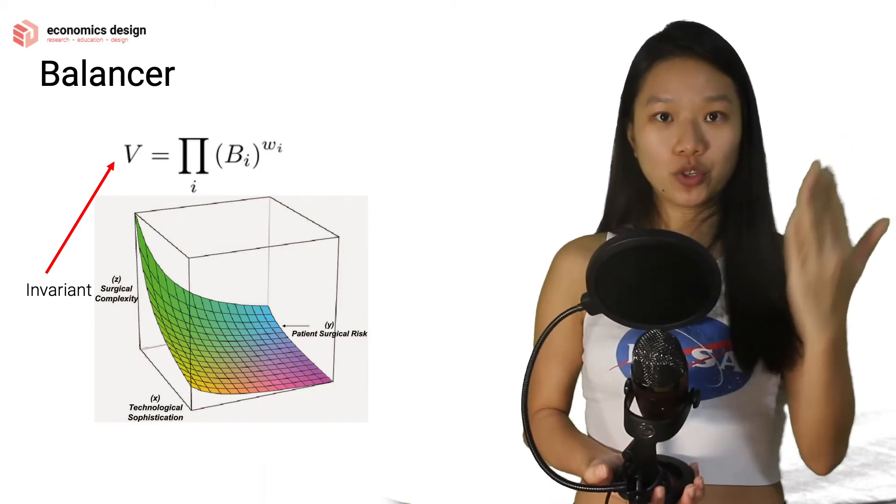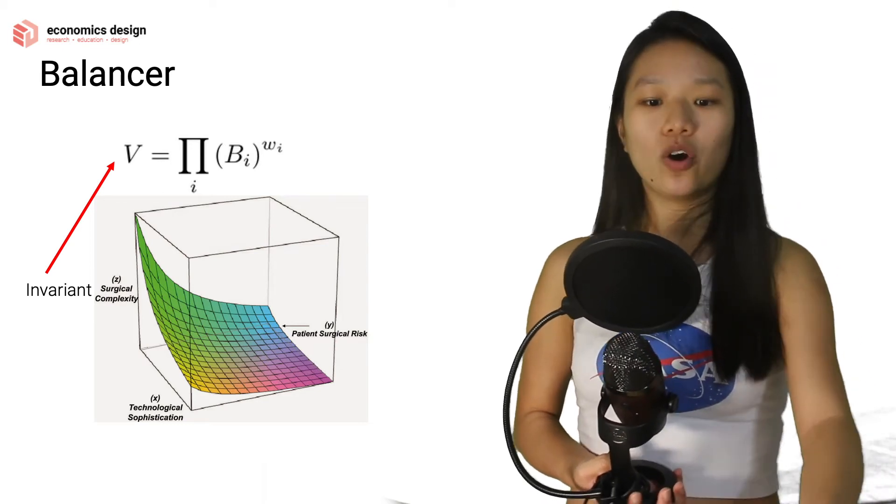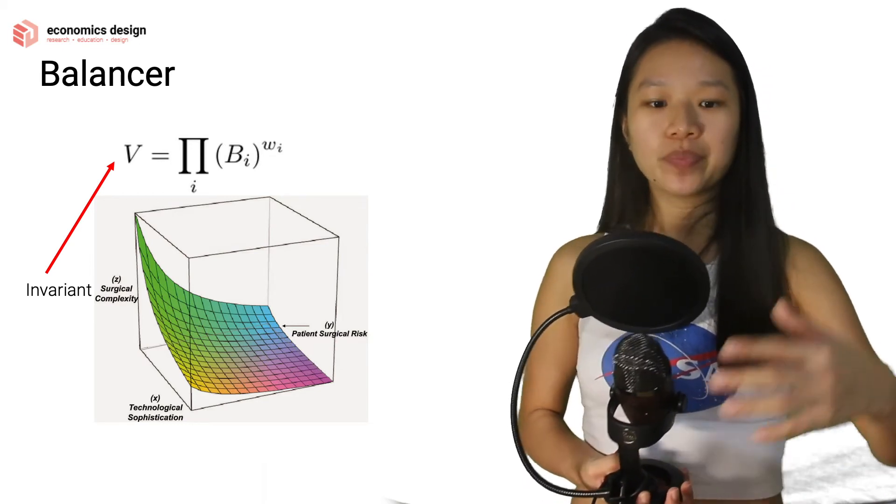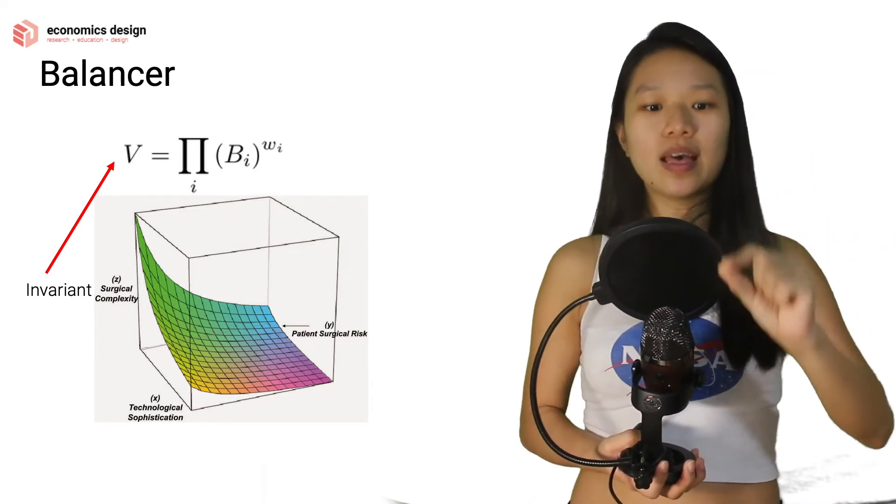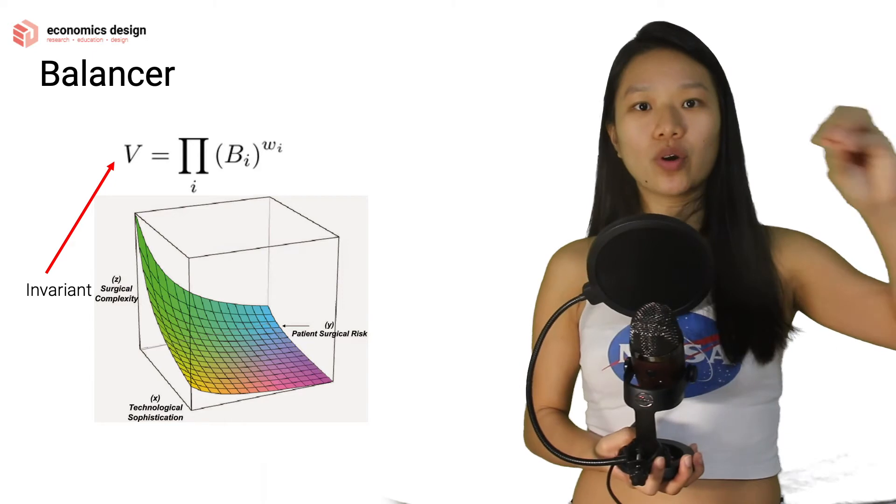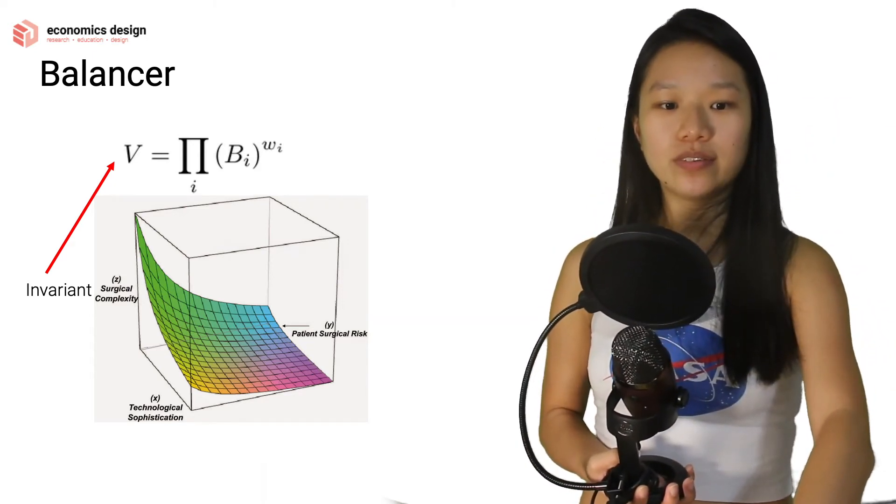If you look from a 2D angle, you can just see the relationship between X and Z, or just the relationship between X and Y. You can look at different angles to understand the relationships between the two tokens. But at the end of the day, all three tokens are connected in a specific way.